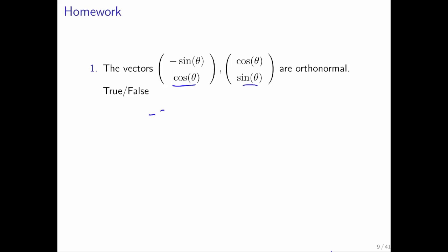You get minus the sine of theta times the cosine of theta plus the cosine of theta times the sine of theta. So clearly, that's equal to 0.